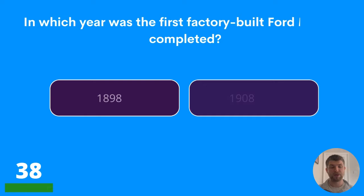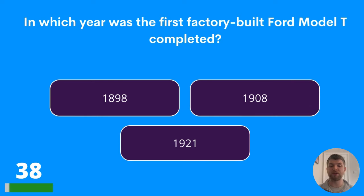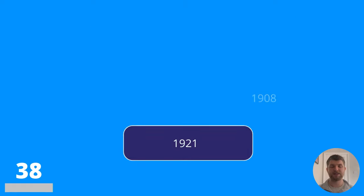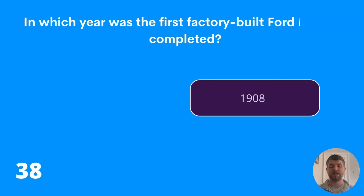Question thirty-eight: in which year was the first factory-built Ford Model T completed? 1898, 1908, or 1921? The answer is 1908.